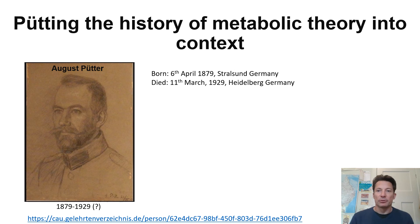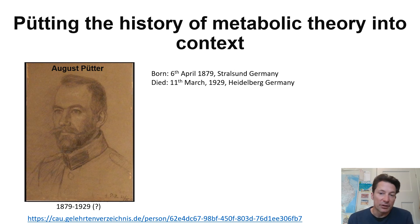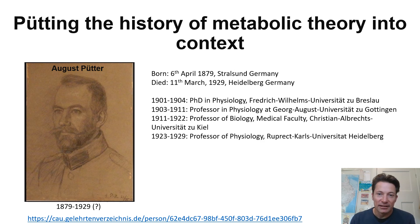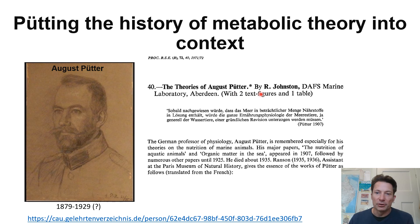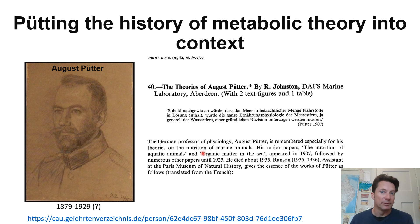Whereas the models I want to talk about in this talk are those that are explicit about the actual dynamics of energy being taken up and then used within the organism. What I'm trying to do is put this into historical context. The most important thing is to put it into the context of Putter. August Putter was a physiologist who was born in 1879 and died in 1929 and lived his whole life in Germany. He wrote everything in German. He got his PhD in 1904 in physiology and had various positions at universities in Germany.